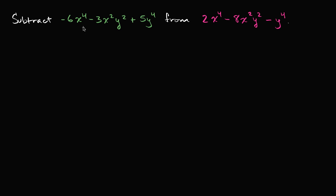We're asked to subtract negative 6x to the fourth minus 3x squared y squared plus y to the fourth from 2x to the fourth minus 8x squared y squared minus y to the fourth. I encourage you to pause this video and give it a try. All right, let's work through it together. So we're going to subtract this green polynomial from this magenta one.